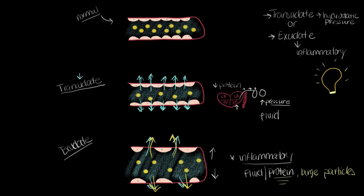Think about these things we've discussed. Transudate relates to hydrostatic pressure — so that would mean CHF, liver failure, those things change the pressure. Even kidney failure, because low protein can cause these leaky vessels to occur. And for inflammatory, think about things that cause an inflammatory response in the body. When we're talking about the lungs, pneumonia is a big one. Lupus is an inflammatory process as well. So when you see these terms, think about what the cause is and what's happening at the level of the vessels.